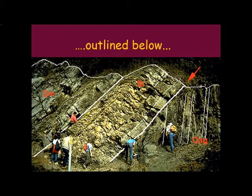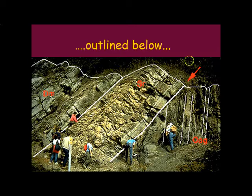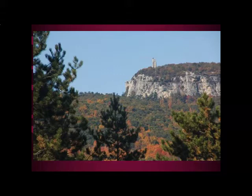Then another event of tilting and uplift occurred, which tilted these two rock layers. Weathering and erosion happened because they were exposed to the surface. Then subsidence happened again — it went below sea level and more sediments were deposited on top. That is what causes an angular unconformity.